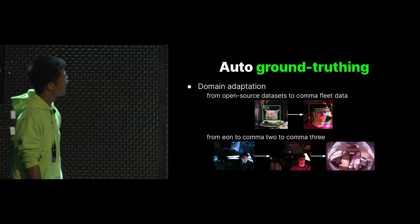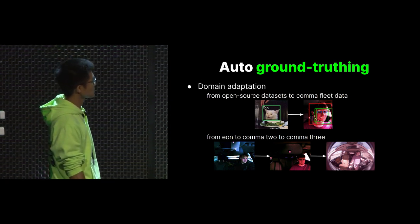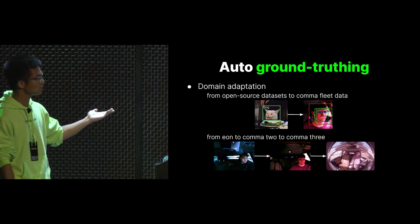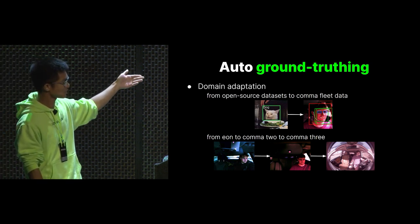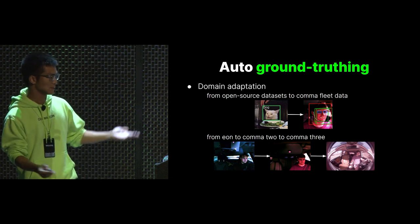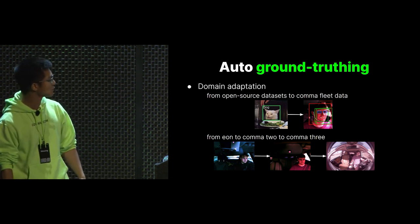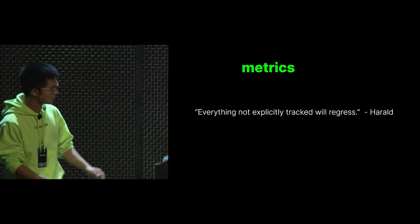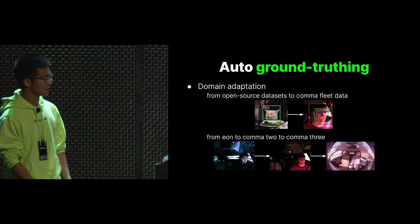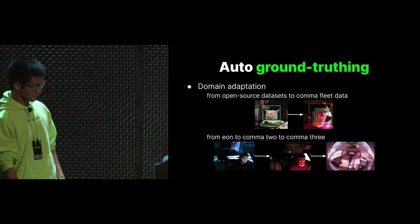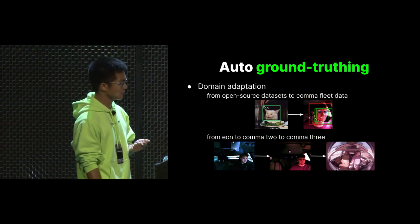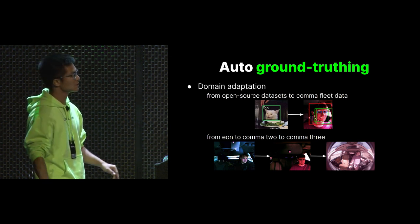Speaking of domain adaptation, the idea can also be applied to, say, when we want to train a model that used to work on Eons to work on Comma Twos. We can start by making the Eon pictures pinkish to mimic the IR lighting in the Comma Two. It's the same trick when we want to transfer the Comma Two model's knowledge into the Comma Three model. That's how we make the Comma Three DM model good at launch without actually using a lot of Comma Three data.